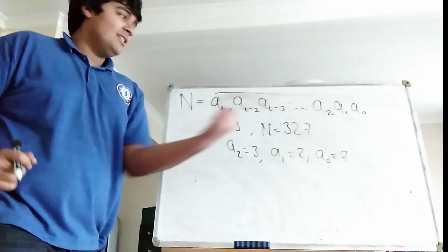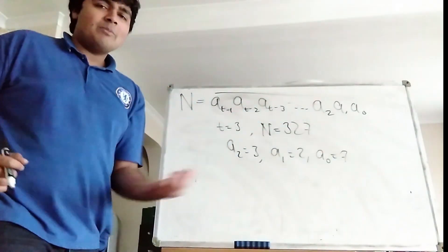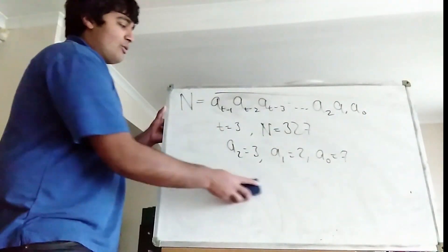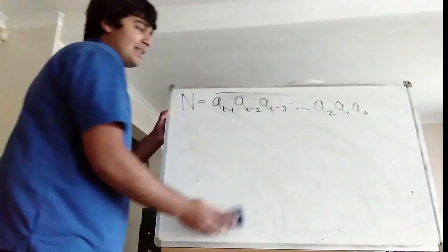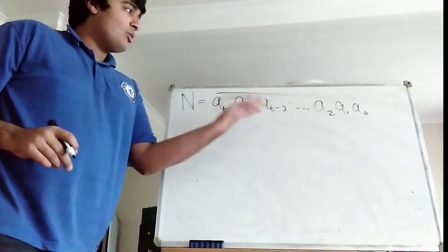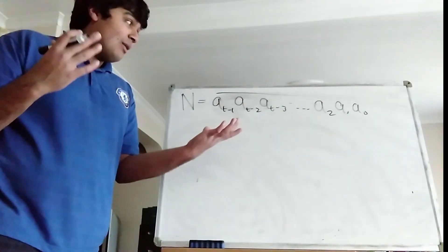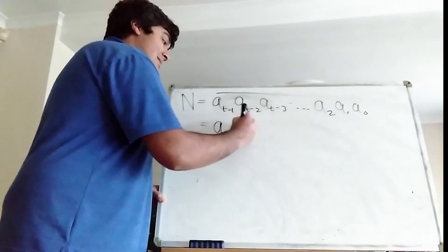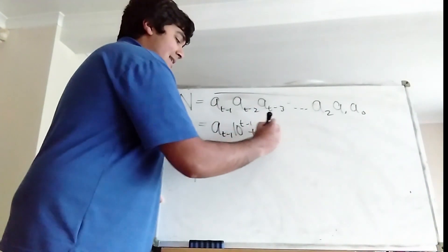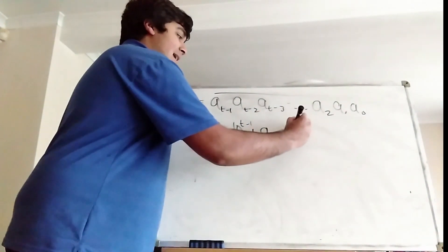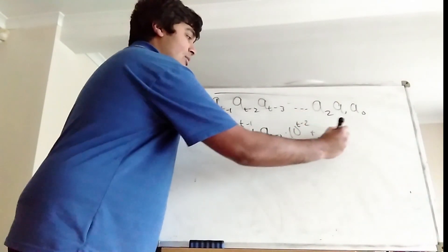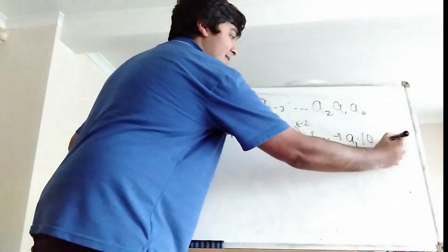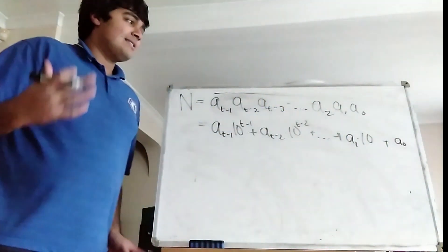This notation doesn't mean multiply — it just means shove them together. Because we're considering things in base 10, we can write N as the sum of powers of 10: N = a_{t-1} × 10^{t-1} + a_{t-2} × 10^{t-2} + ... + a_1 × 10 + a_0 × 1.